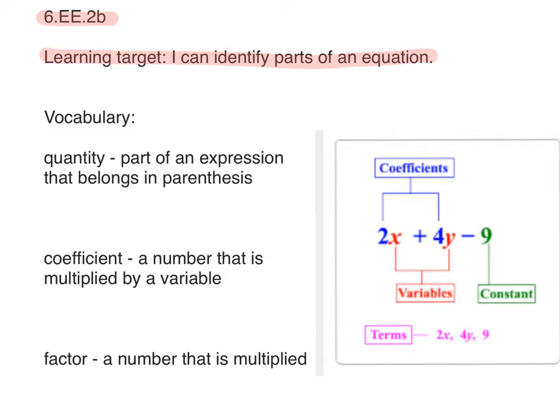You'll see those parts of an equation in this picture down below, so here's what those things mean. Quantity is the first one, and it's not in that picture, but a quantity is part of an expression that belongs in parentheses. If I take the quantity of 2 times r and divide it by 3,